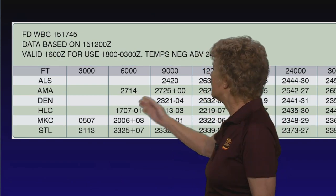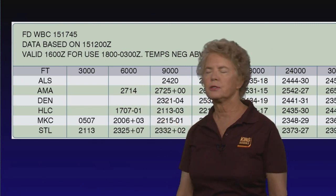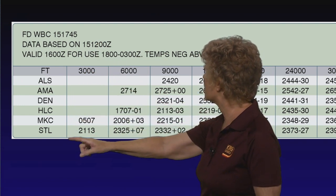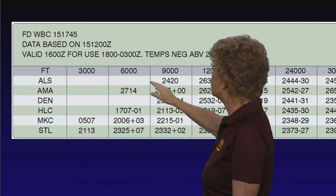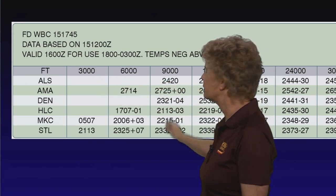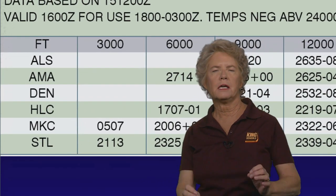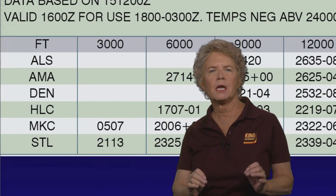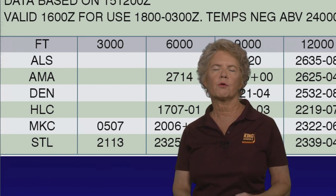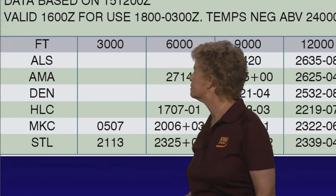Let's take a look now at this figure. This is our forecast winds and temperatures aloft. Notice that locations are down the left side, and we've got a whole bunch of altitudes going across to the right: 3,000, 6,000, 9,000, and so on. Let's take a look now at Kansas City, which is MKC, and we want to look at the winds and temperatures aloft forecasts for Kansas City at 6,000 feet.